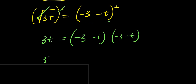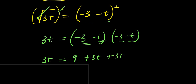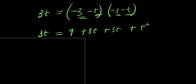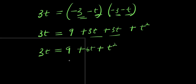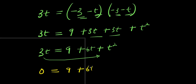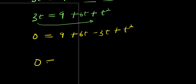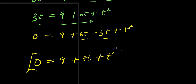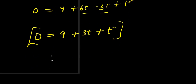Expanding the right side: negative 3 times negative 3 is 9, negative 3 times negative t is positive 3t, negative t times negative 3 is positive 3t, and negative t times negative t is positive t squared. So 3t equals 9 plus 6t plus t squared. Moving 3t to the right it becomes negative 3t, giving 0 equals 9 plus 6t minus 3t plus t squared, which simplifies to t squared plus 3t plus 9 equals 0.